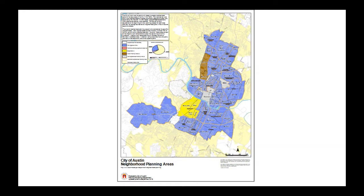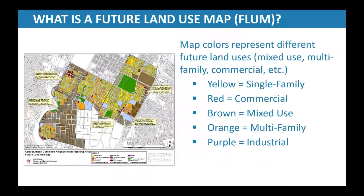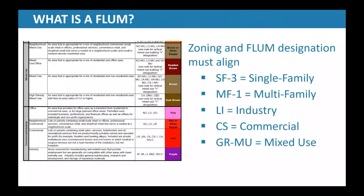This map shows in blue the areas that have City Council approved neighborhood plans, most of which have a future land use map. This is the land use map for the Central Austin combined neighborhood planning area. The colors on the future land use map represent broad land uses: yellow represents single family, red represents commercial, brown represents mixed use, orange represents multifamily, and purple represents industrial. We have a chart showing what zoning districts are considered consistent with each land use category — for example, SF3 would be consistent with single family land use, multifamily one would be consistent with multifamily, etc.